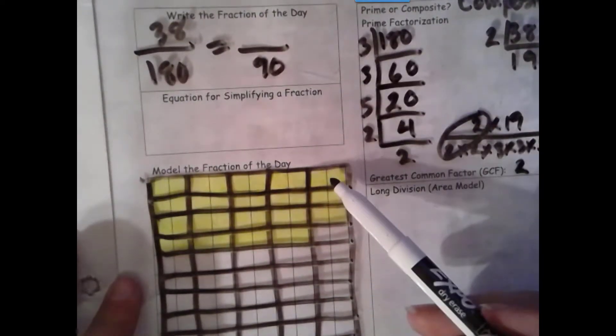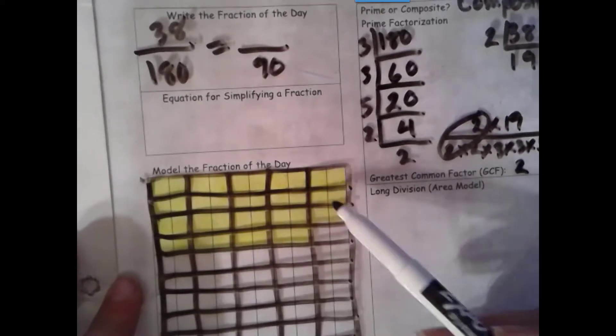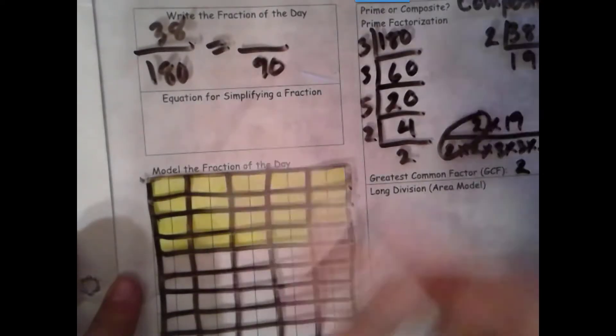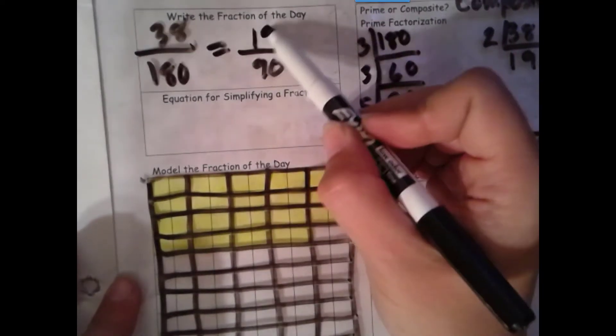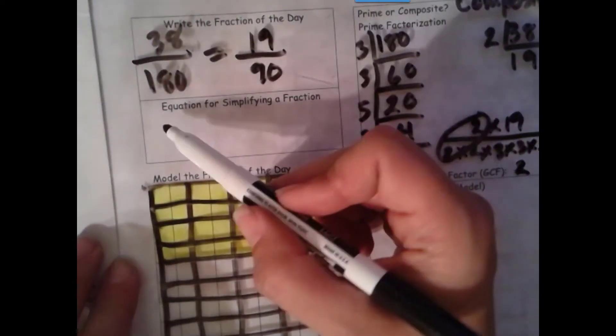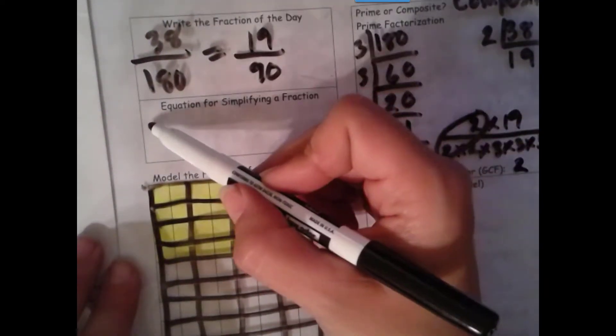Okay, and then the shaded area: 5, 10, 15, 16, 17, 18, 19. Okay, we've proven it with our prime factorization and our model.